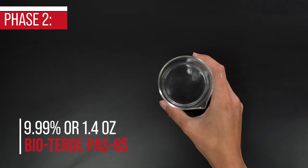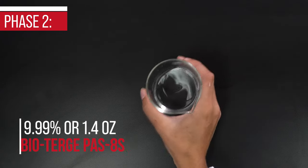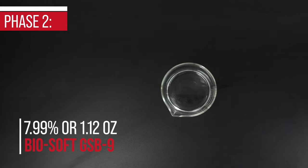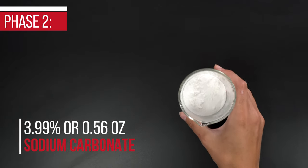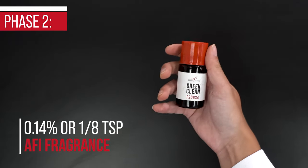Phase 2: 9.99% or 1.4 ounces of Bioterge PAS-8S, 7.99% or 1.12 ounces of Biosoft GSB-9, 3.99% or 0.56 ounces of sodium carbonate, and 4.99% or 1.8 teaspoon of AFI fragrance.